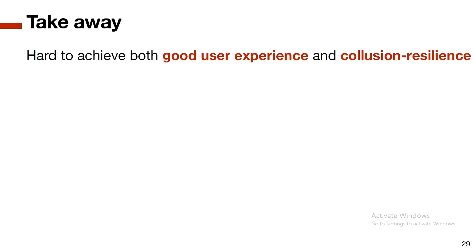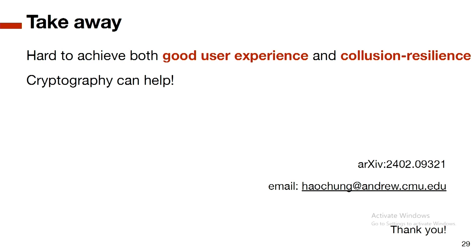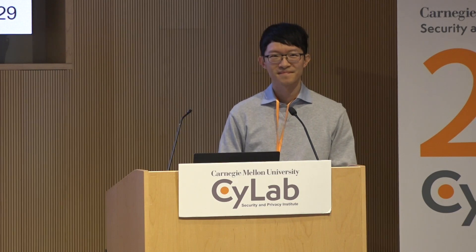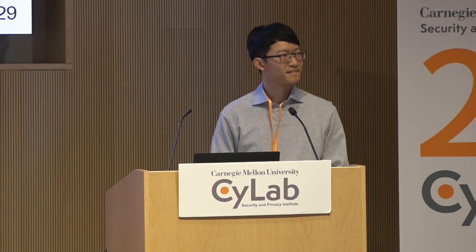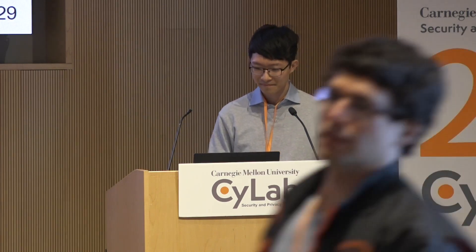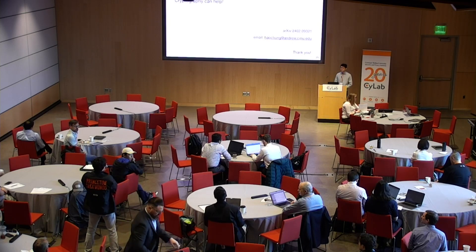To conclude: the first takeaway is that it is really difficult to achieve both good user experience — a simple strategy for users — and defense against miner-user coalitions. The second takeaway is that cryptography can help, as we will see in the next talk. The paper is available online. Thank you.